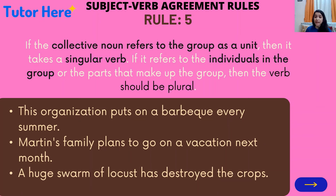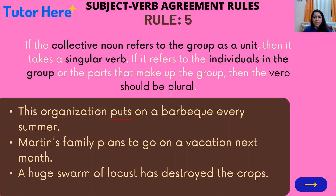Rule number five: if a collective noun refers to the group as a unit — as one subject — then use a singular verb form. But if it refers to the individuals or parts that make up the group, use a plural verb form. For example: 'This organization puts on a barbecue every summer' — the organization is one subject, so 'puts' is singular. 'Martin's family plans to go on a vacation next month' — Martin's family is one subject, so 'plans' is singular. 'A huge swarm of locusts has destroyed the crops' — the swarm is considered one singular subject, so 'has' is used.